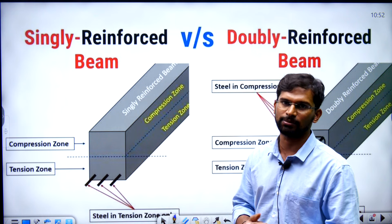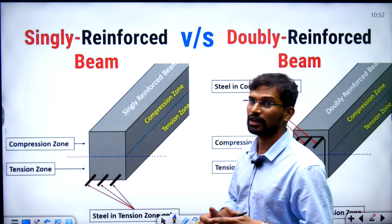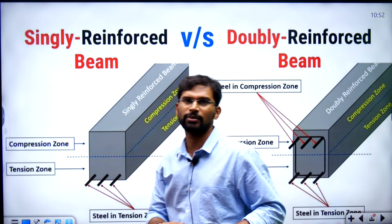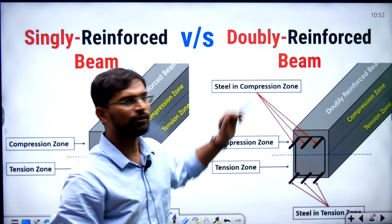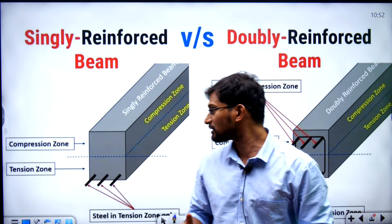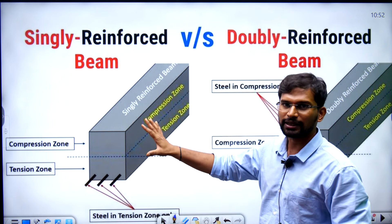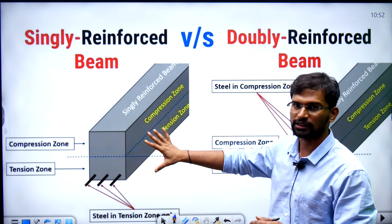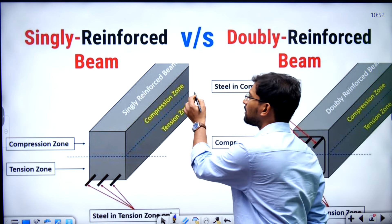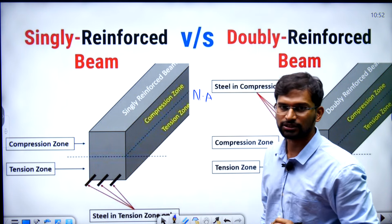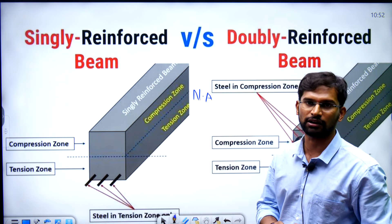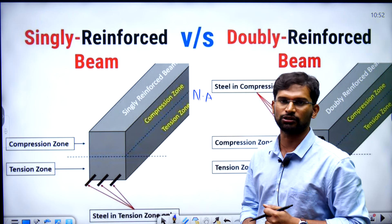So, we consider RCC beams divided into two sections. In the syllabus, we are going to have singly reinforced beams and doubly reinforced beams. We consider the depth of the section. If we consider the middle section, we consider the neutral axis — where the stresses are zero. The neutral axis is a section where stresses are zero. Above the neutral axis, compressive stresses develop, and below, tensile stresses develop.